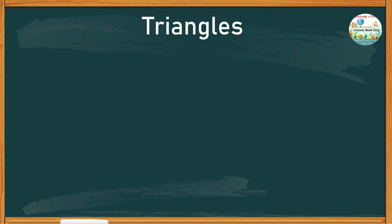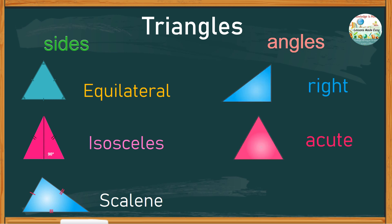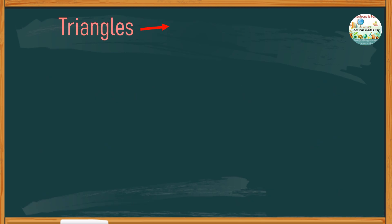Triangles can be named according to sides and angles. Based on sides, we have the equilateral triangle, isosceles triangle, and the scalene triangle. Based on angles, we have the right triangle, acute triangle, and the obtuse triangle. We will talk about each type further in details. Let's start with the types of triangles named based on sides.